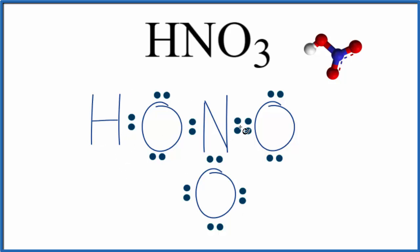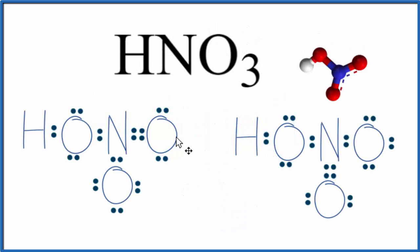As we look at our Lewis structure here, there are actually a few more ways we could draw this. We have this double bond here, but we could put it either here or here, and those would be different structures. So let's move the double bond to this oxygen right here. Now the double bond, we had it here, now it's over here.